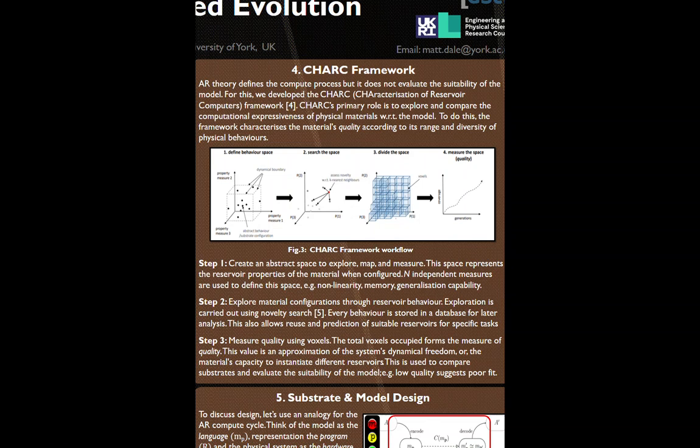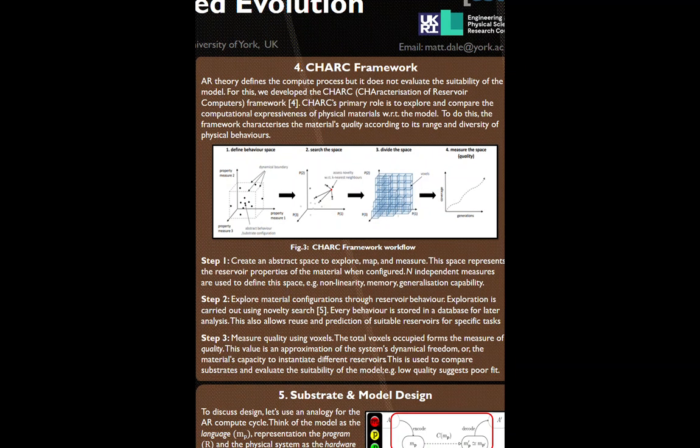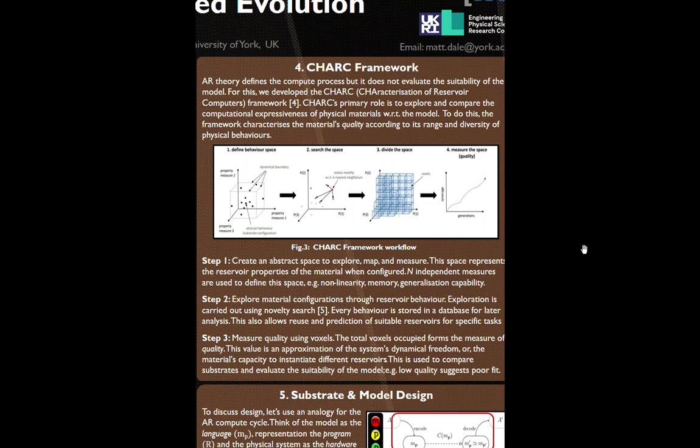In step 3 we measure how much of this space is covered by using voxels. The total number of voxels forms a measure of the quality. You can think of this quality as an approximation of the system's dynamical freedom, or its ability to instantiate many different reservoirs. For example, if the quality is low this would suggest the poor fit of the model.